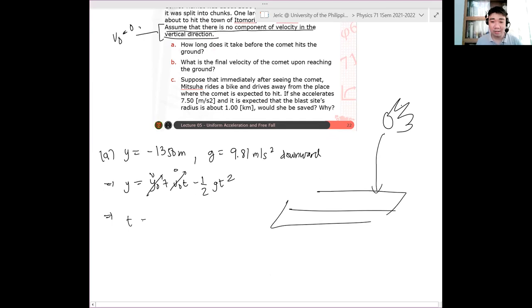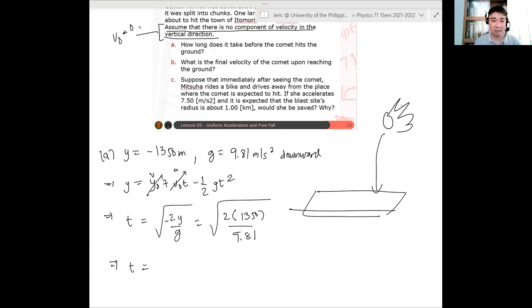Negative one half. So we will see here that T is just equal to 2Y over G. There's a negative sign there. So negative 2, negative 2 will cancel. And we get square root of twice 1,350 over 9.81. And we will see that the comet will fall in about 16 seconds, if I remember correctly. This is about 16.7 seconds.